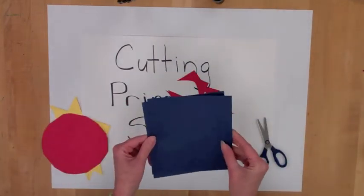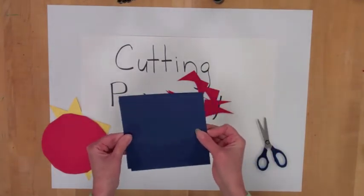The next shape we have are squares and we are going to leave the blue squares as squares.